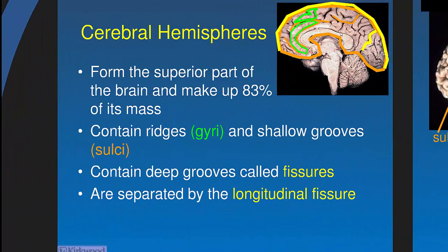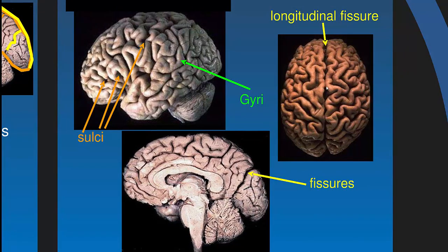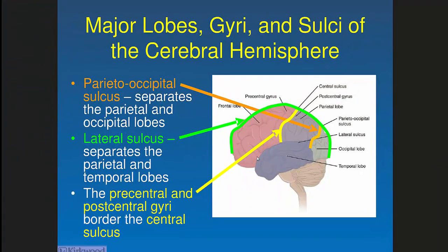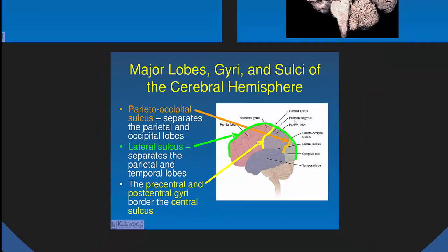Moving on to fissures and sulci — major features of the brain. A gyrus is a ridge or hill; a sulcus (plural: sulci) is a valley. A very deep valley is called a fissure. The longitudinal fissure separates the left and right hemispheres. The parieto-occipital fissure and the lateral sulcus — between the temporal and frontal lobes — are important. The central sulcus is particularly important: it divides the frontal lobe from the parietal lobe.